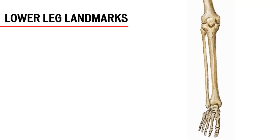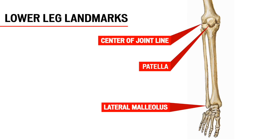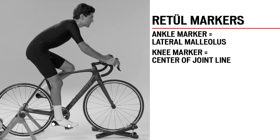Moving up the lower leg, we find three landmarks. The lateral malleolus is the bony protrusion at the distal, or far, end of the fibula — commonly referred to as the ankle bone. The patella is the largest sesamoid bone in the body; a sesamoid bone is a floating bone in a tendon, typically around a joint. The patella glides at the end of the femur in the trochlear groove. Proper alignment of the patella is crucial for joint safety, and its primary functional role is knee extension. The joint line is the point where the distal head of the femur and the proximal end of the tibia meet. The ankle marker is placed on the center of the lateral malleolus, and the knee marker is placed at the very end of the femur, just on top of the center of the joint line.